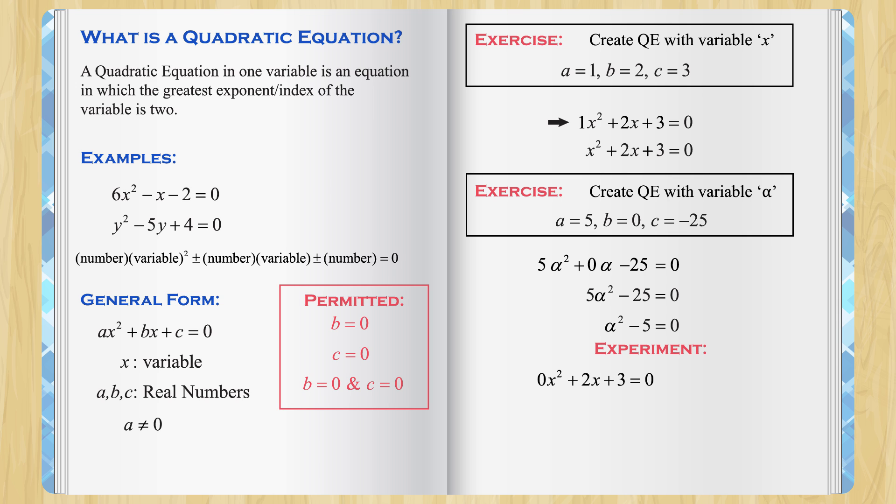Now, 0 times x squared is 0 so it disappears and we are left with 2x plus 3 equal to 0 and this equation is not quadratic. You probably can recognize this as a linear equation in one variable.